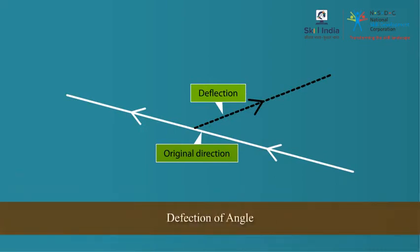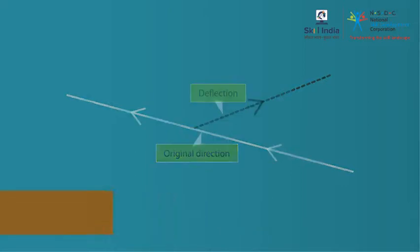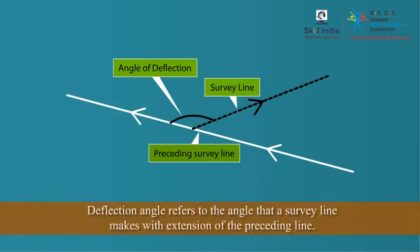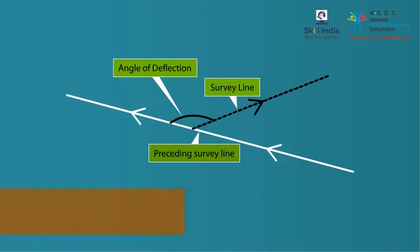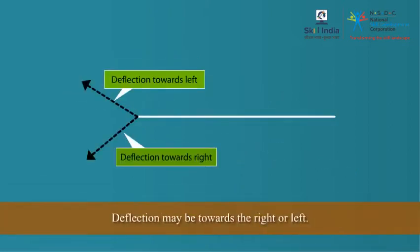Deflection angle refers to the angle by which a line is deflected from its original direction. In other words, it refers to the angle that a survey line makes with the extension of the preceding line. Deflection may be towards the right or left depending upon the measurement of the angle in the clockwise or anti-clockwise direction from the extension of the preceding line.